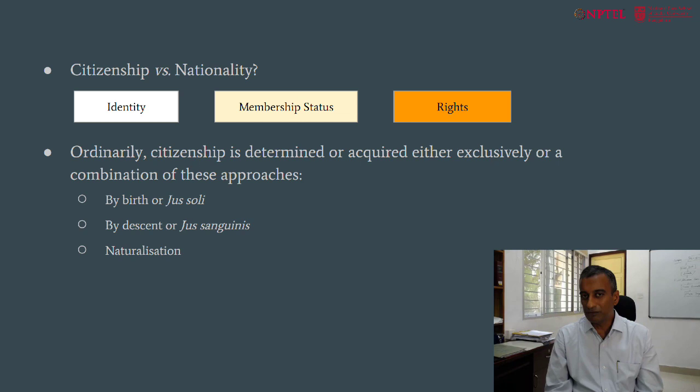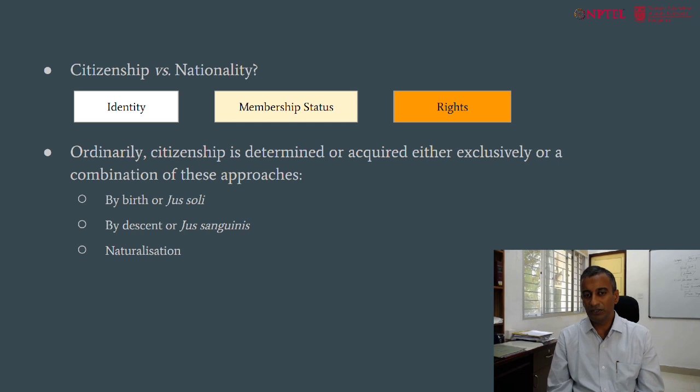So citizenship is full and equal membership in a political society, conferred on someone who shows an effective connection to that political society. Very often we confuse ideas of citizenship and nationality as well. Nationality is about the connection between an individual and the nation, whereas citizenship is a legal category of membership. Let's explain with a few examples.